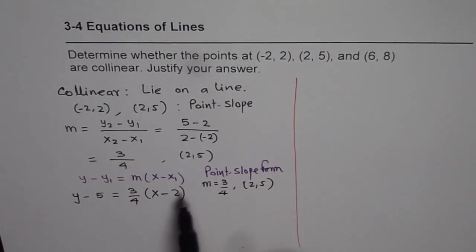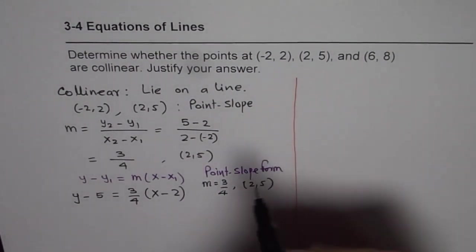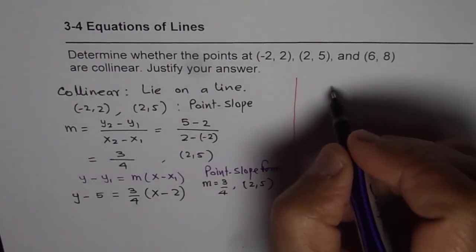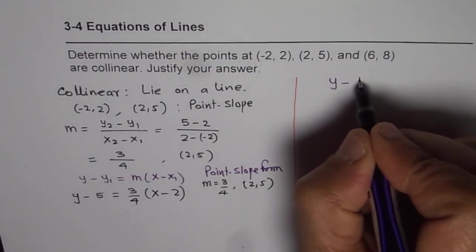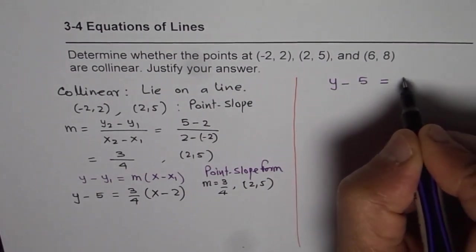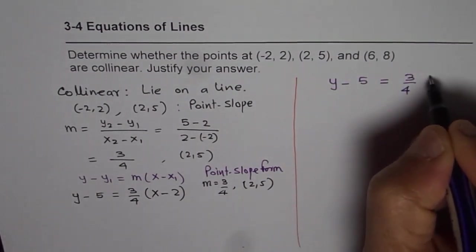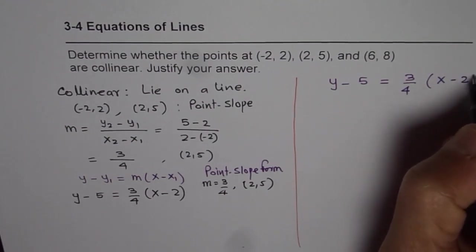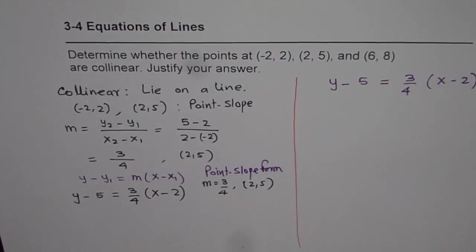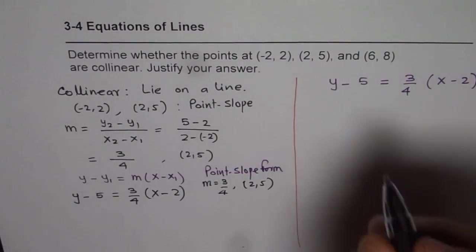Those two points form one line. Now let us check the third point. We have the equation as y minus 5 equals 3/4 times (x minus 2).